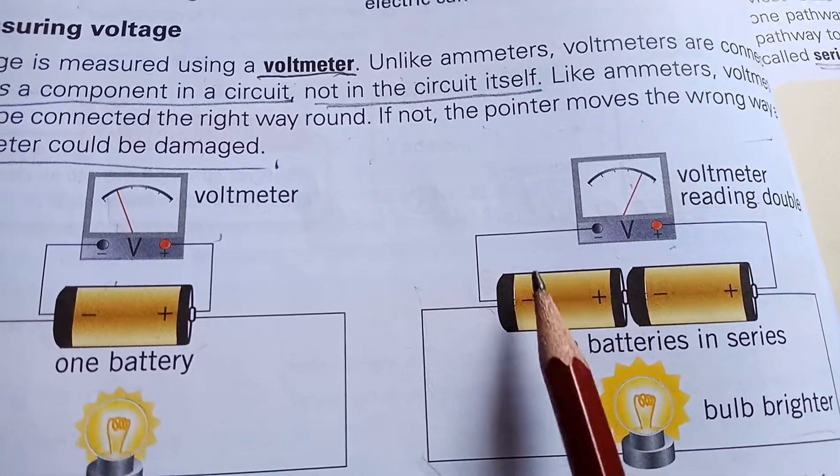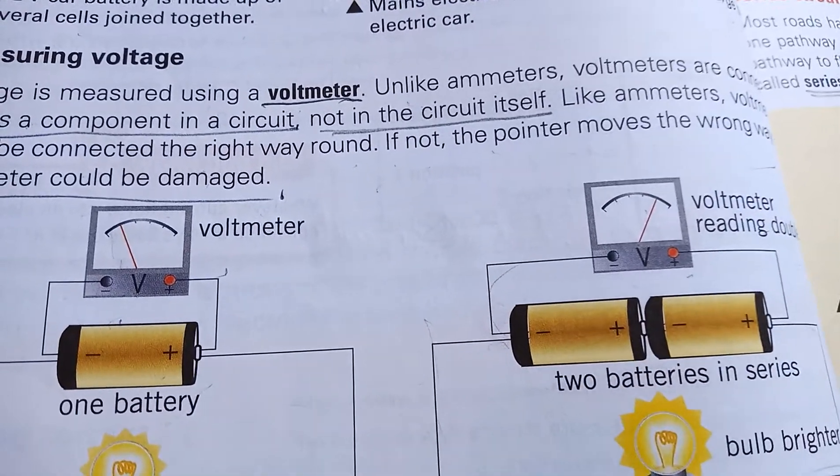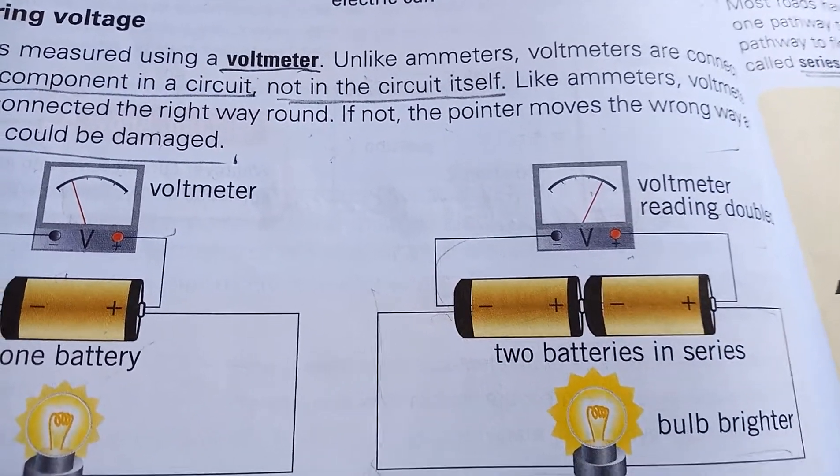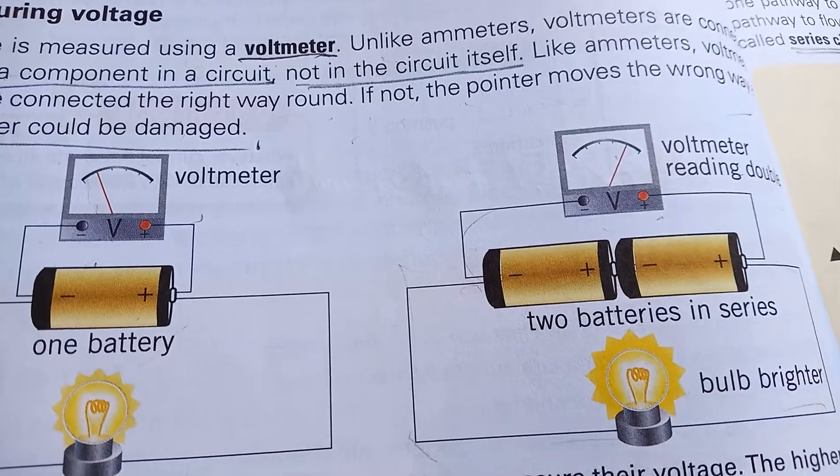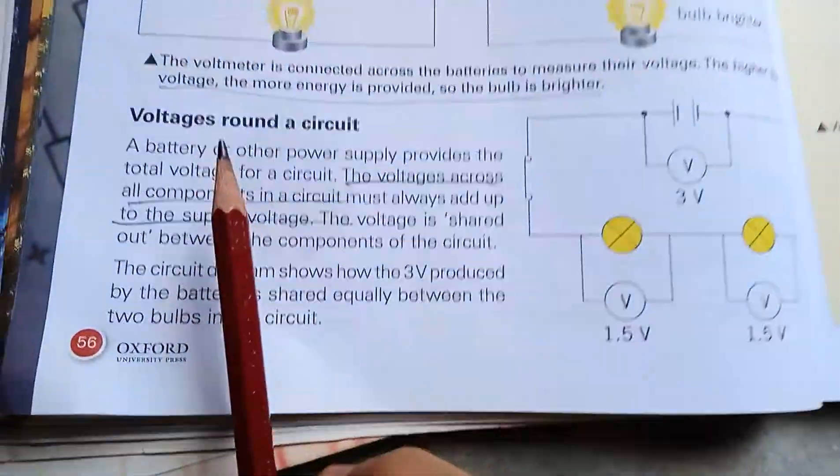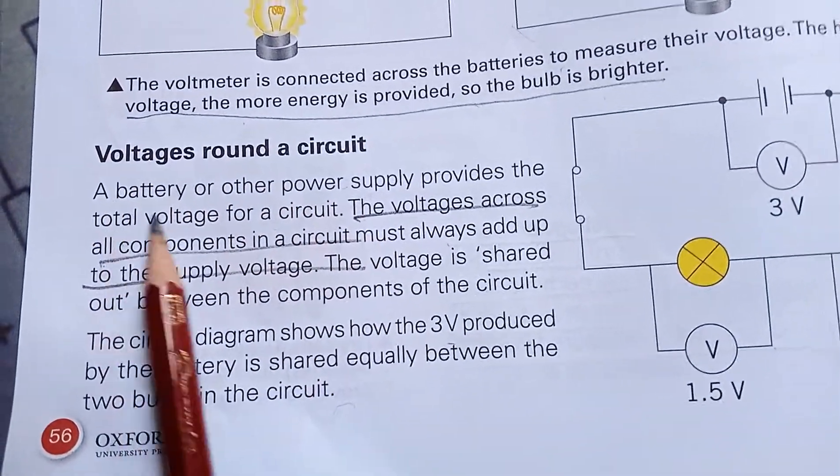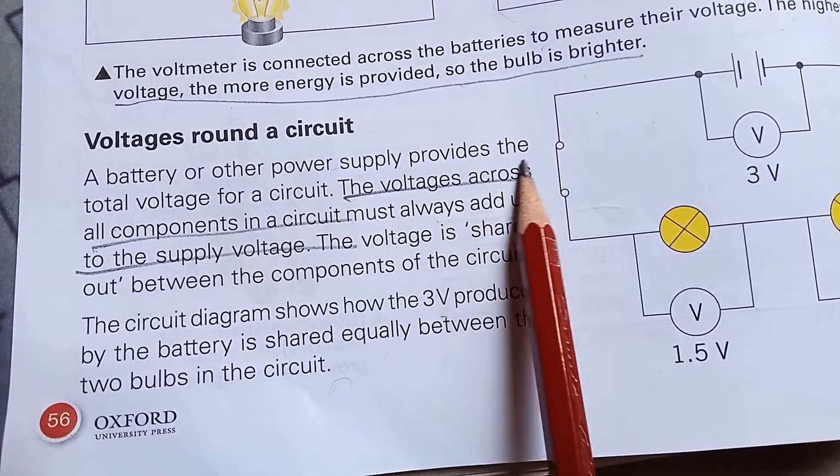It is connected across the batteries so that it can measure the voltage. The higher the voltage, the more energy is provided, so the bulb is brighter.